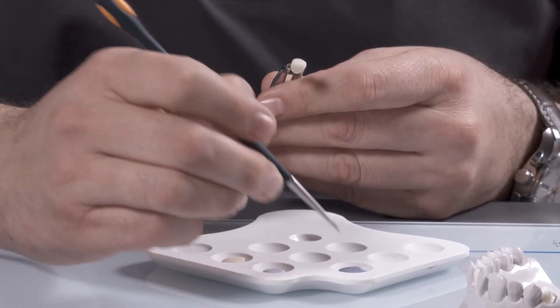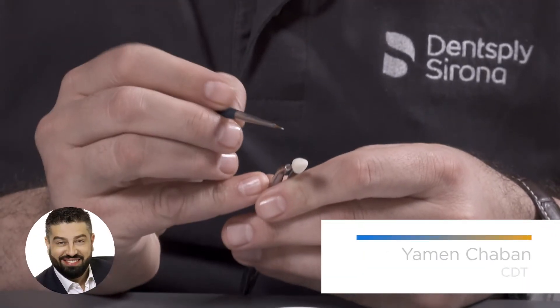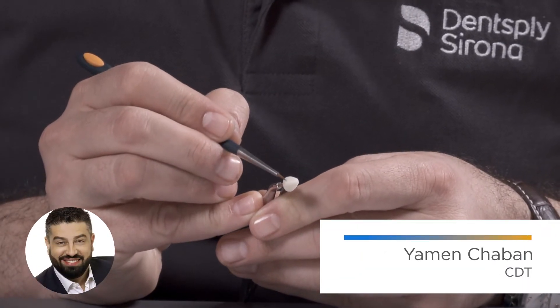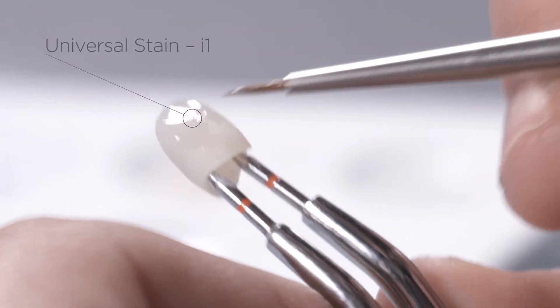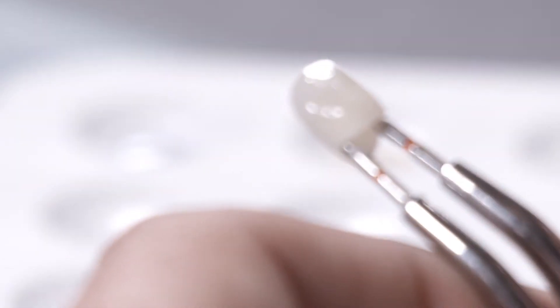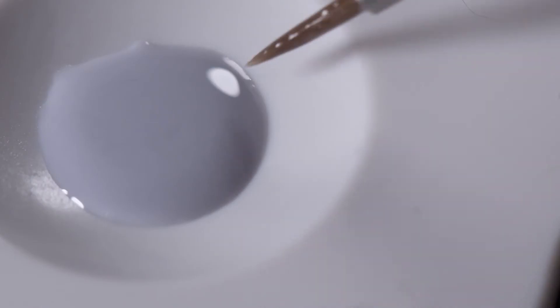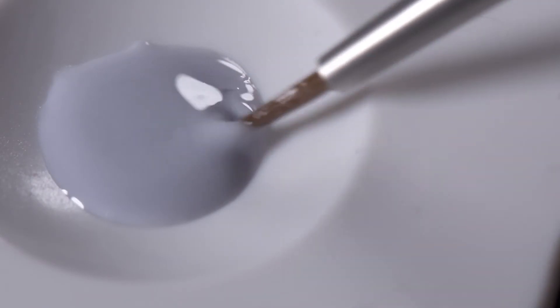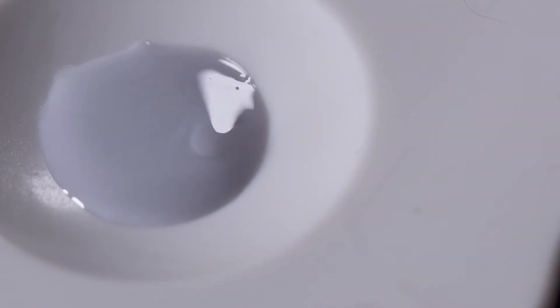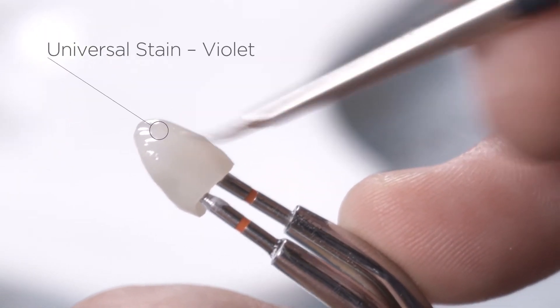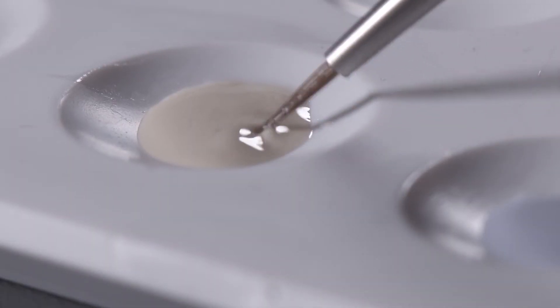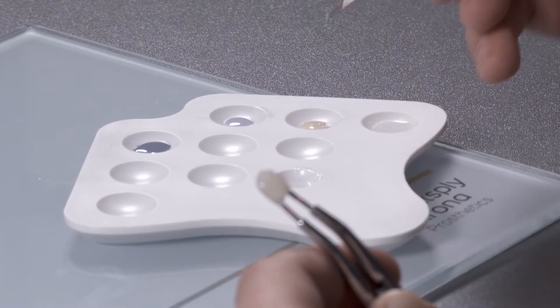Customize the mesial and distal ridge areas with incisal stain I1. Customize the mamlon structures in the incisal area with cream stain. Then highlight the areas between the mamlons with some violet, and characterize the mamlon structures in the incisal area with cream stain.